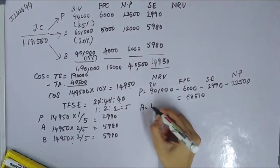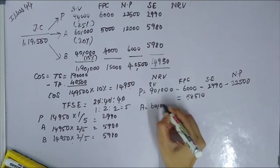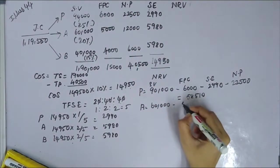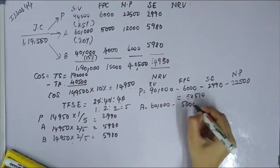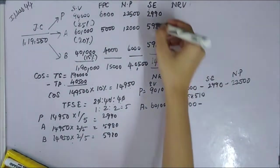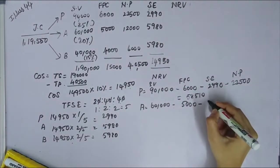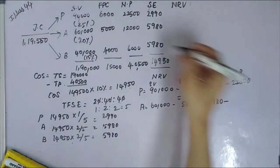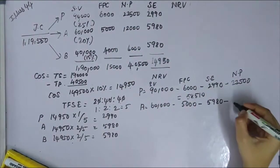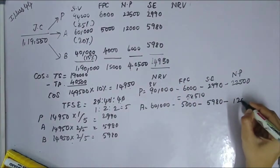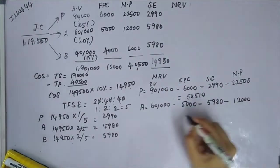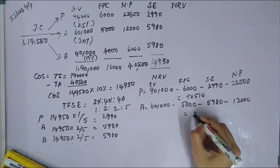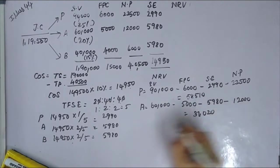For by-product A: sale value 60,000, minus further process cost 5,000, minus selling expenses 5,980 (approximately 5,090), minus net profit 12,000 — giving NRV of approximately 37,020.